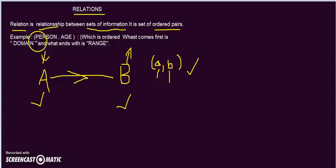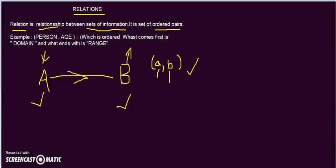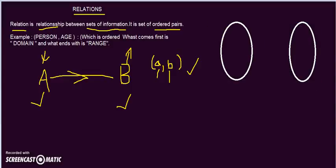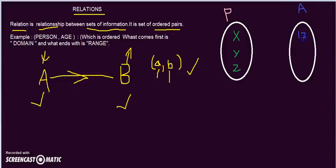Let us take an example of a set of persons and ages. So I have person names — X, Y, Z — and ages corresponding to those persons. Let me draw the two sets. This is my set A, which is the person set, containing the names X, Y, and Z. And this is my set B, which is the age set, containing the ages 12, 15, and 20.